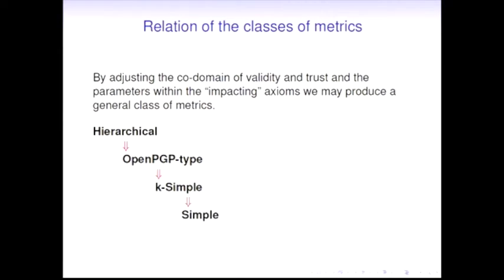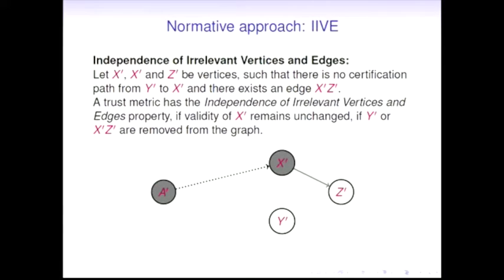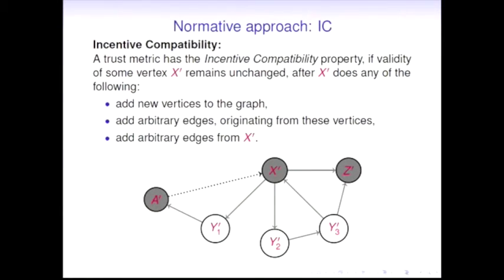This was the descriptive approach where we provided some obvious but still axiomatic foundation for this class of metrics. Now we want to look at a couple of properties derived from classic social choice theory. Independence of irrelevant alternatives turns into independence of irrelevant vertices and edges, which basically says that if we remove any outgoing edge of X and any other disconnected vertex Y, this should not change the validity of X, which is pretty natural.